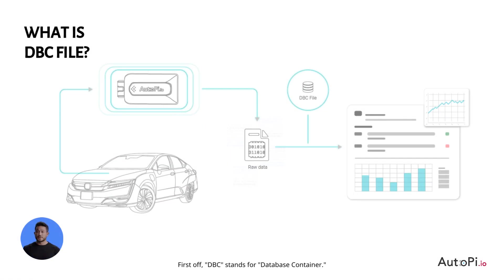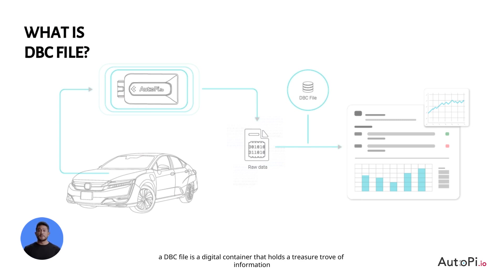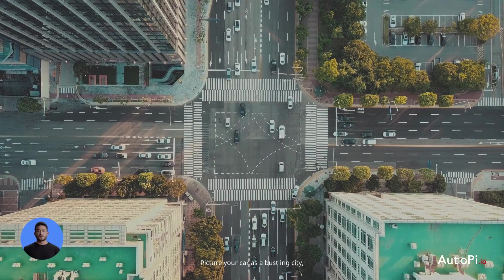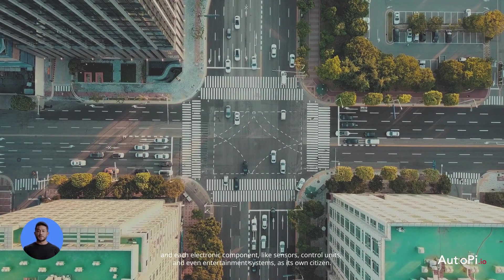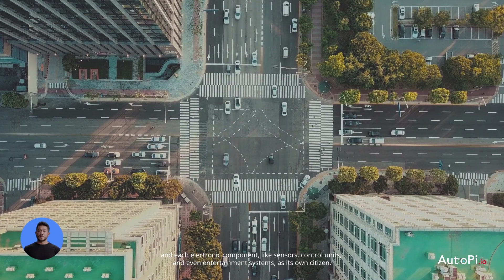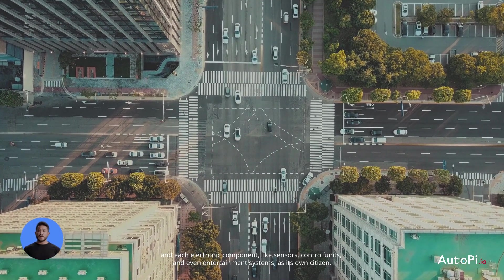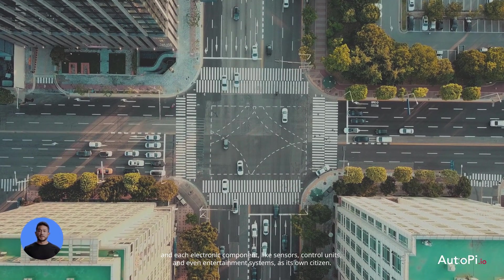DBC stands for Database Container. In the context of the automotive industry, a DBC file is a digital container that holds a treasure trove of information about how different electronic components inside a vehicle communicate with each other. Picture your car as a bustling city, and each electronic component, like sensors, control units, and even entertainment systems, as its own citizen.